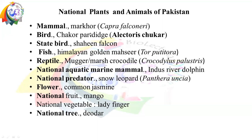The national mammal is from the goat family — Markhor. This is the largest goat, and its scientific name is Capra falconeri. It is the national mammal. And if we talk about the national bird, it is Chakor Partridge, commonly called Chakor. Its scientific name is Alectoris chukar.